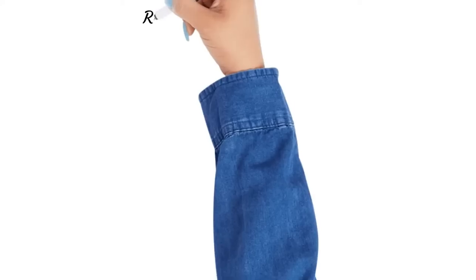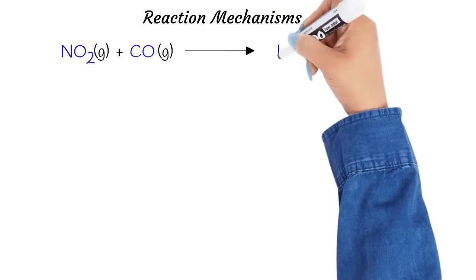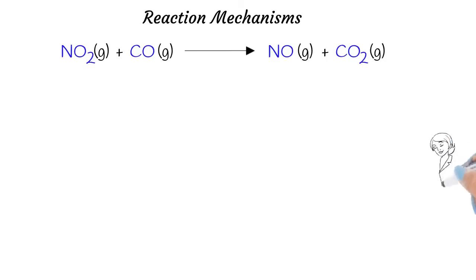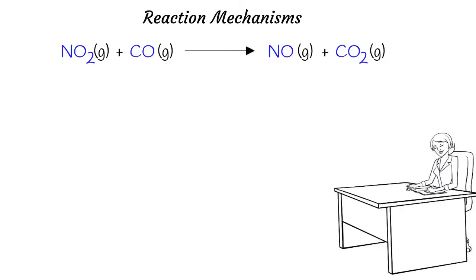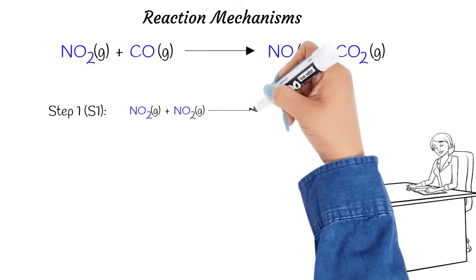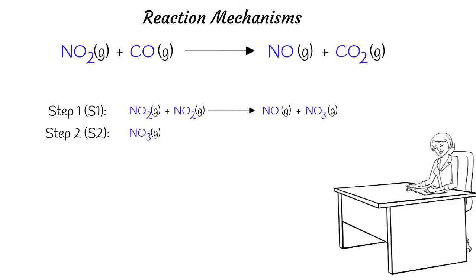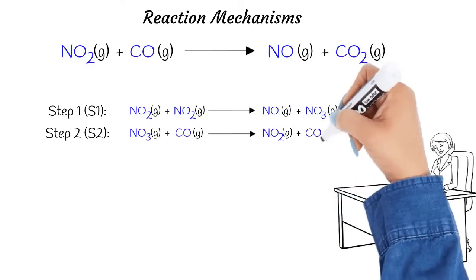Let's take a look at a few examples to understand reaction mechanisms better. Our first example is the reaction between nitrogen dioxide gas and carbon monoxide gas. One possible mechanism for the overall reaction involves two elementary steps. In step 1, two NO2 molecules react to form NO plus NO3. In step 2, NO3 which was produced in step 1, reacts with a CO molecule to give NO2 and CO2.